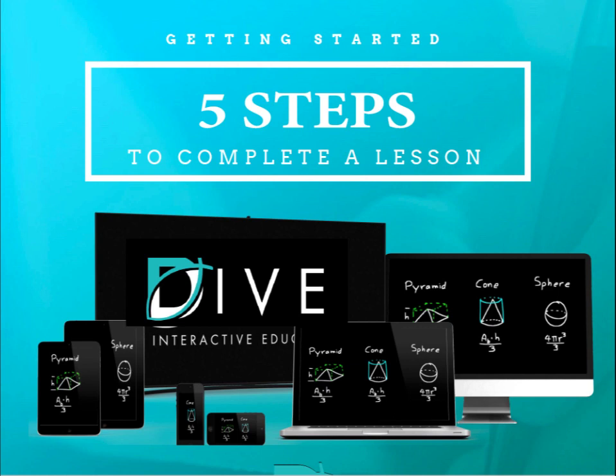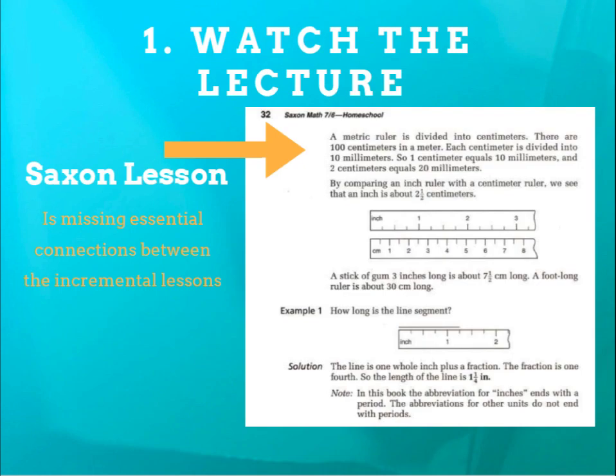Welcome to this Getting Started video for Dive Algebra 1.5 through Calculus, the dive lectures that teach those Saxon curriculums. Let's go ahead and dive right in and start with the five steps to complete a lesson. When we talk about the five parts of a dive Saxon lesson, we're talking about part one, watching the dive lecture, and then two, the lesson practice, three, the problem set, four, grading the homework, and five, correcting the homework.